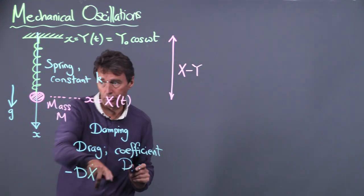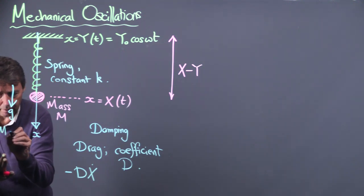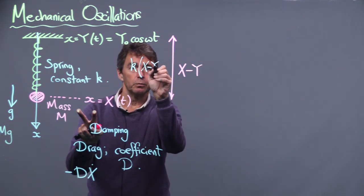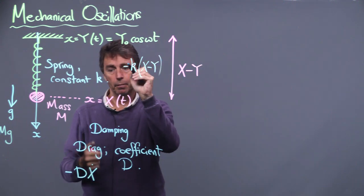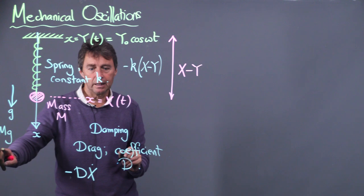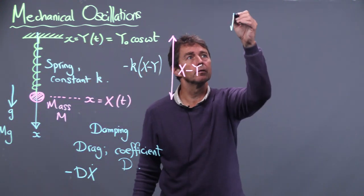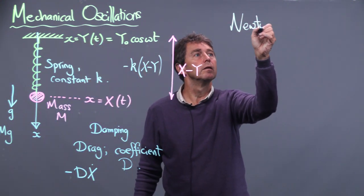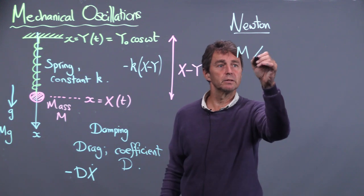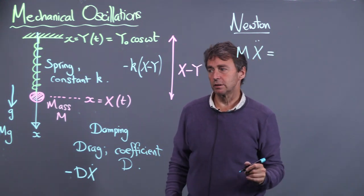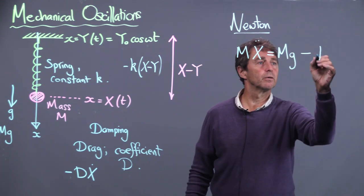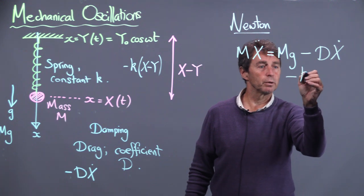Air drag gives a resistive force proportional to speed: d times the speed gives the drag force. So it's −d·ẋ — that's the drag force. The gravity force is mg. The spring force is k(X − Y) pointing up. The drag points away from the motion, and gravity acts down.